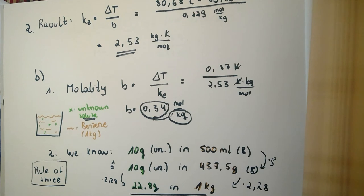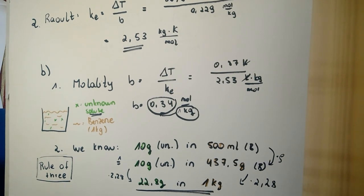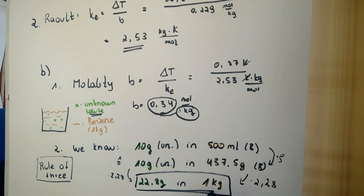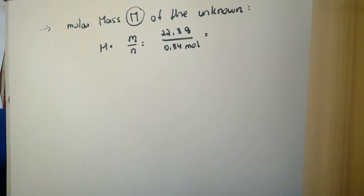If we multiply with 2.28, we can see how many grams of the unknown would be in one kilogram of benzene. With that result we can calculate the molar mass, because we standardize the value of 10 g on the mass of one kilogram of benzene.